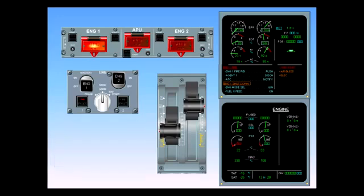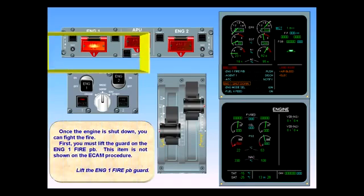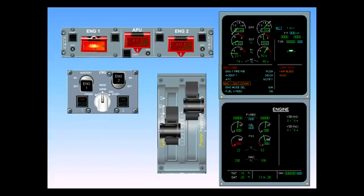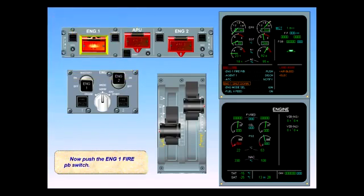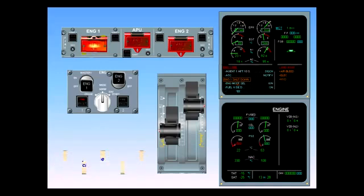Once the engine is shut down, you can fight the fire. First, you must lift the guard on the engine one fire push-button. This item is not shown on the ECAM procedure. Lift the engine one fire push-button guard. Now, push the engine one fire push-button switch. When released, the fire push-button switch arms the squibs shown by the white indications and closes fuel, hydraulic, bleed and pack valves of engine one. For this reason, the hydraulic system is added to the secondary failure list.